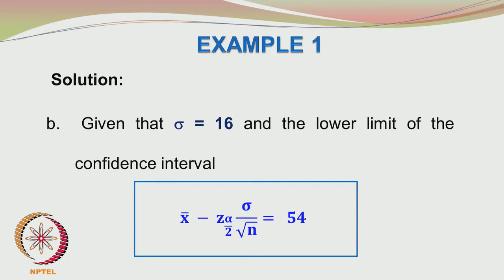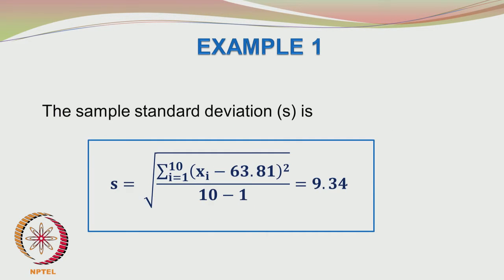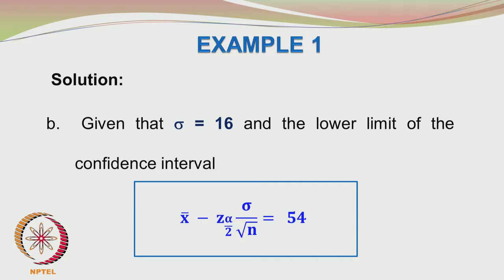We are given the population standard deviation as 16, which is quite different from the sample standard deviation of 9.34 — but that is expected, as a single sample can be far from the true population value. The lower limit of the confidence interval is given as 54. Since the population is normal, sigma is known, and it is a two-sided interval, we use alpha/2 and the formula: x̄ − z(α/2) · σ/√n = 54.